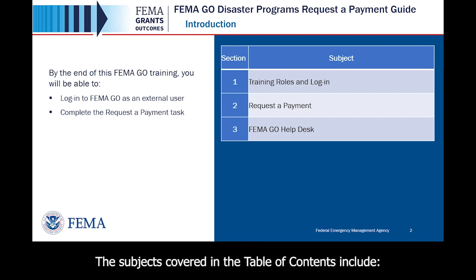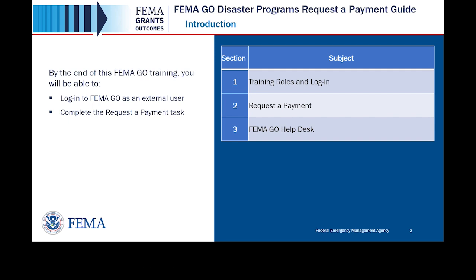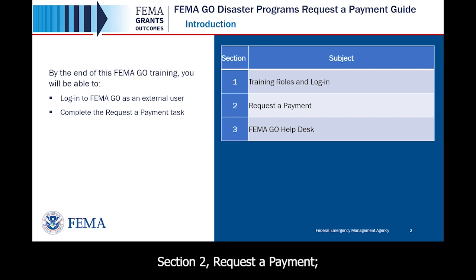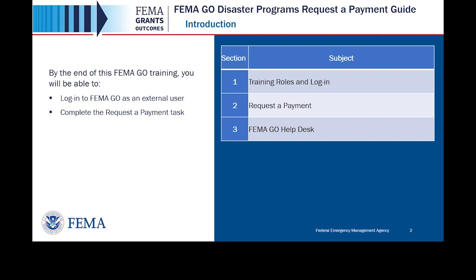The subjects covered in the Table of Contents include Section 1, Training Roles and Login; Section 2, Request a Payment; and Section 3, FEMA GO Help Desk.